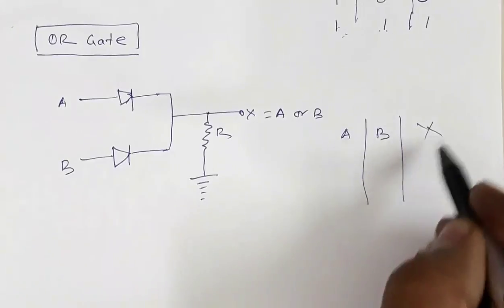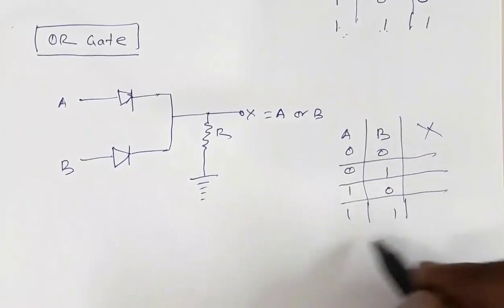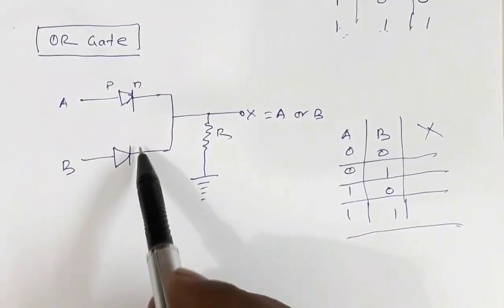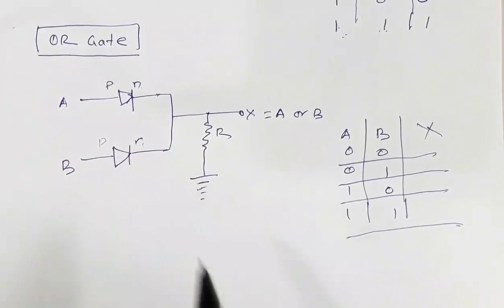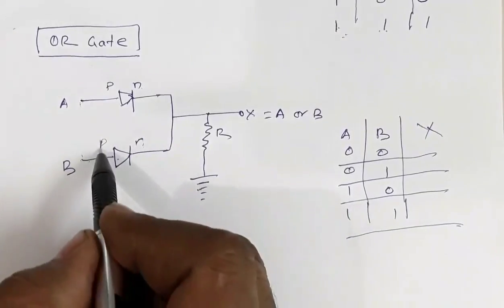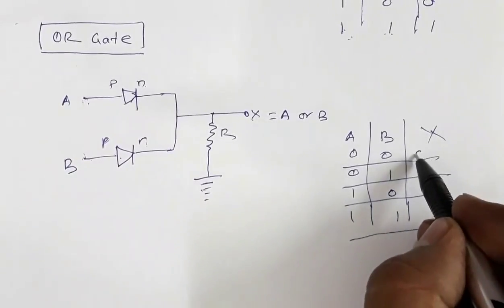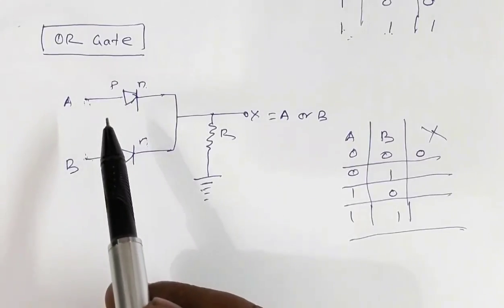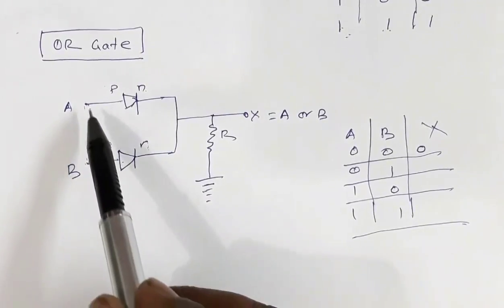Now let us make the truth table for the OR gate: A=0,B=0 gives 0; A=0,B=1 gives 1; A=1,B=0 gives 1; A=1,B=1 gives 1. This is P and this is N for each diode, with the N-type terminal connected to the ground. If both terminals A and B have low potential, both diodes are not forward biased, they will not conduct, so the output will be zero.